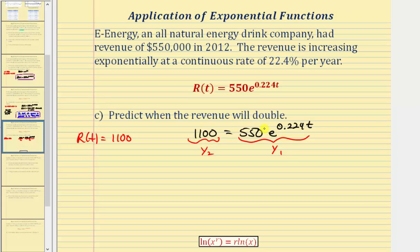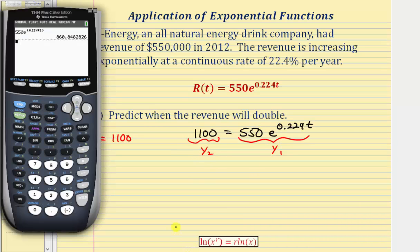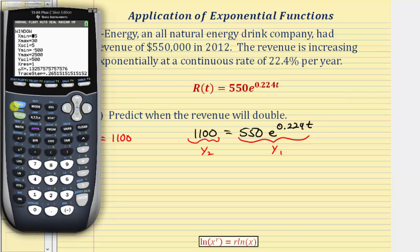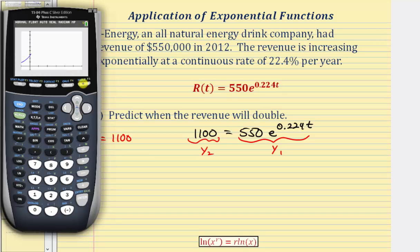I've already entered the right side in y1 using variable x instead of t, and 1,100 in y2. Before graphing, we adjust the window: x-axis from negative 5 to 30, and the y-axis from negative 200 to 1,800 with a y-scale of 200 — so the y-maximum exceeds 1,100. Now pressing graph shows the exponential function and the constant function y equals 1,100.